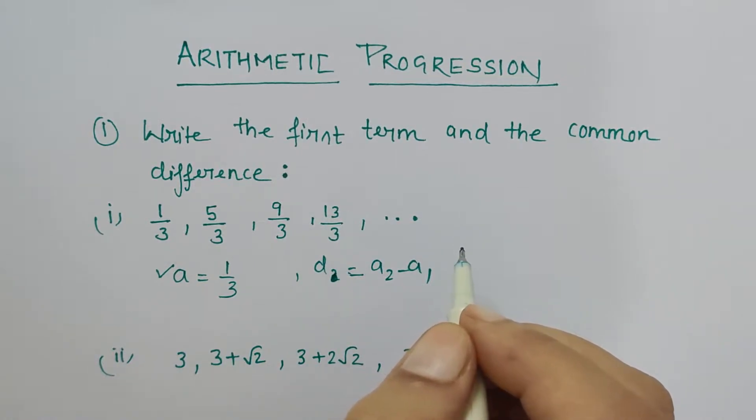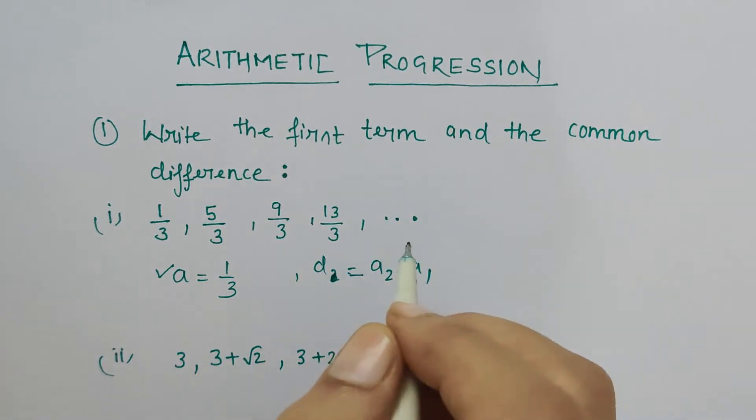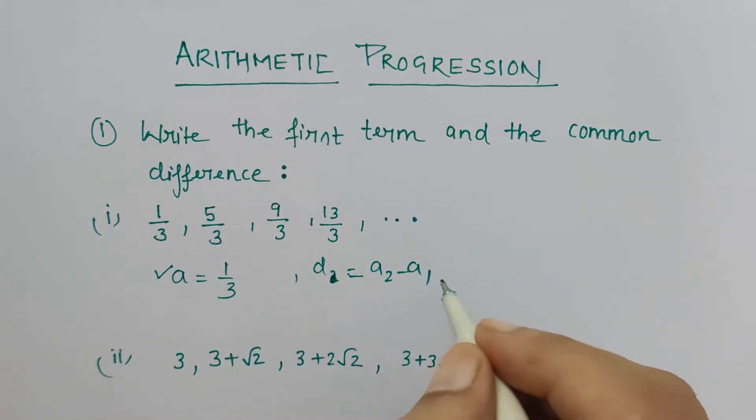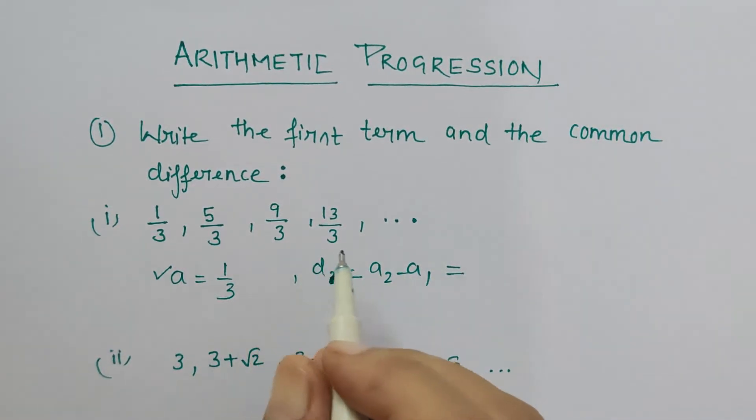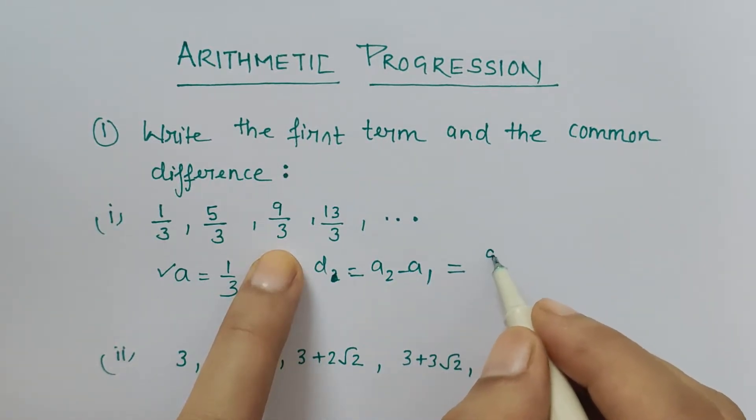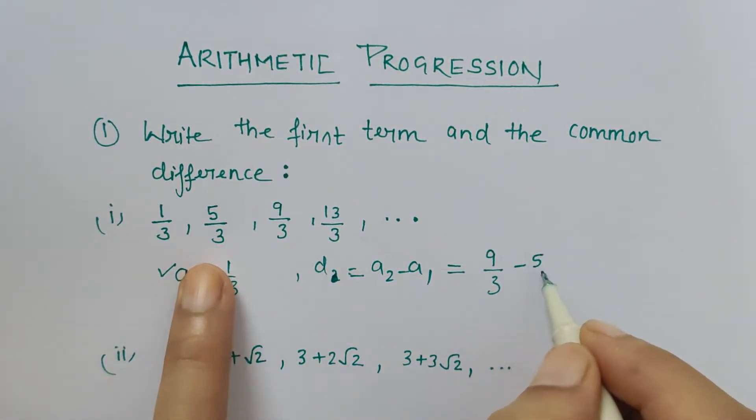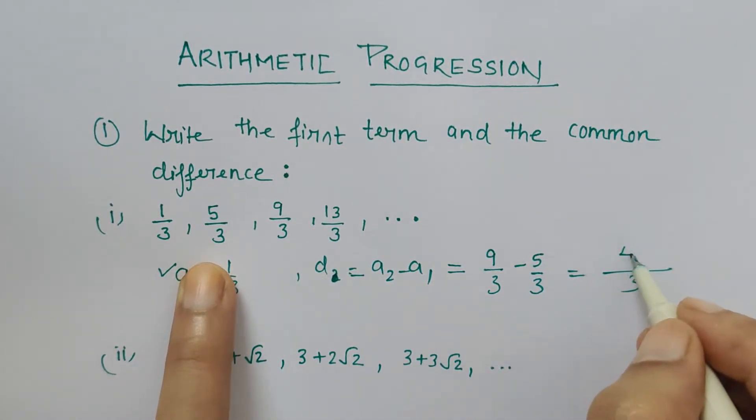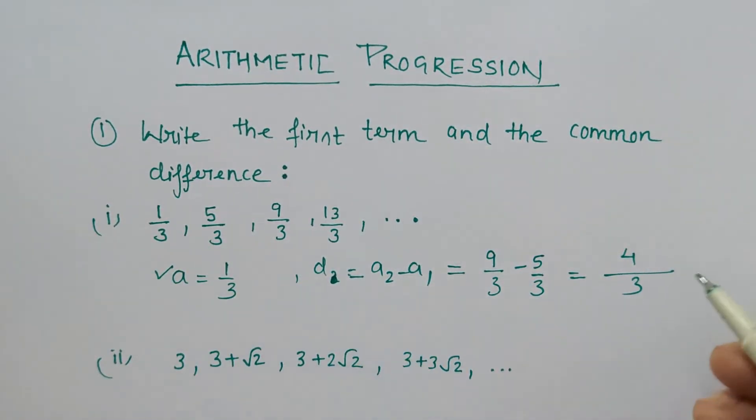You can choose any two numbers in that order, like this minus this or this minus this. So if I choose 9/3 minus 5/3, what I get is 9 minus 5 equals 4, so the common difference here is 4/3.